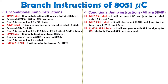One more category is CJNE — Compare and Jump If Not Equal. Here, you write CJNE A, #25H, label. What this does is compare the value of A with 25H, and jump to the label only if A and 25H are not equal. If they are equal, then you skip this instruction.